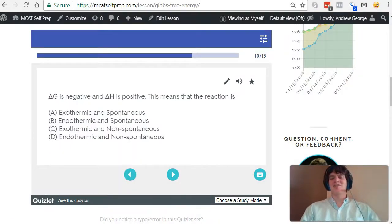Spontaneity is determined by change in G, which is Gibbs free energy. If Gibbs free energy is positive, that means the reaction is non-spontaneous. If Gibbs free energy is negative, it means the reaction will be spontaneous.